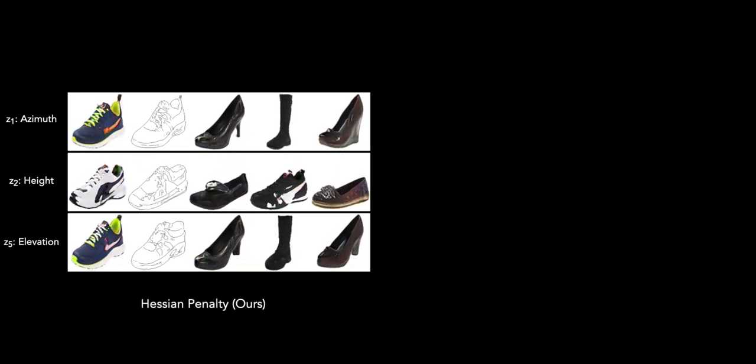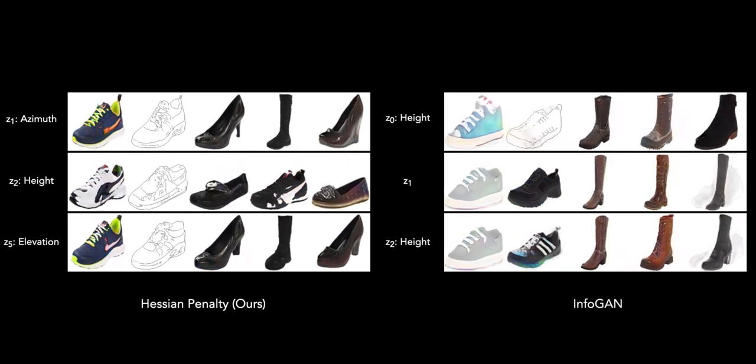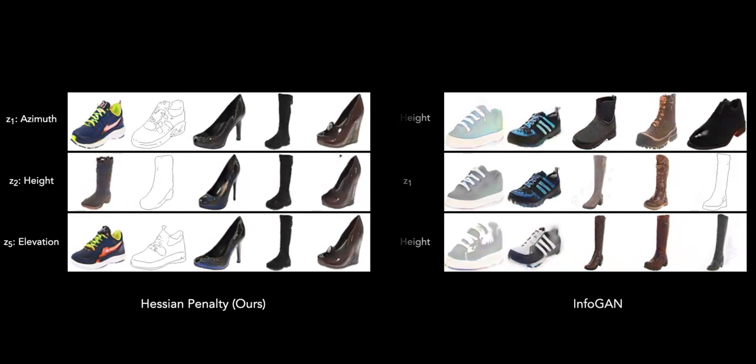We can also compare the representation learned by InfoGAN. It fails to achieve a similar quality of disentanglement.